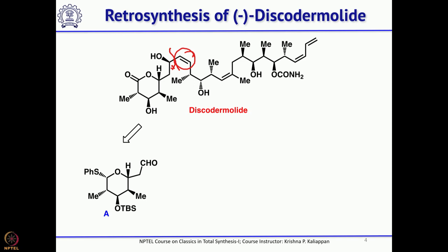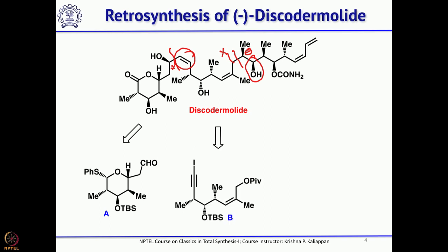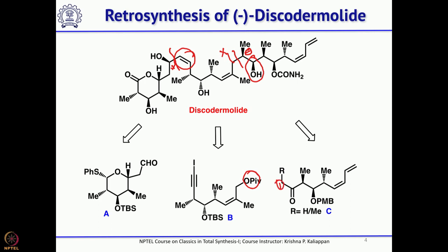The second key disconnection involved having a carbonyl group here instead of an alcohol. If you have a carbonyl group, you should be able to generate an anion, and if this is a leaving group, it is easy to do an alkylation — later the ketone can be reduced to get the alcohol. So this pivaloyl group can be removed, converted into a good leaving group, and then the bond formed by alkylation.